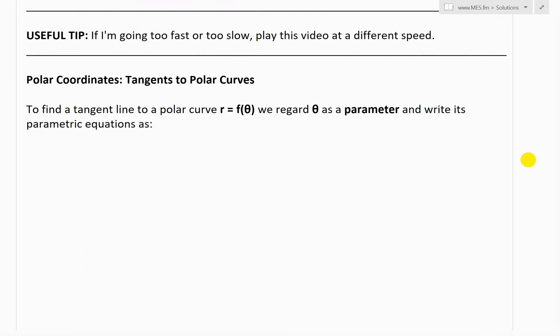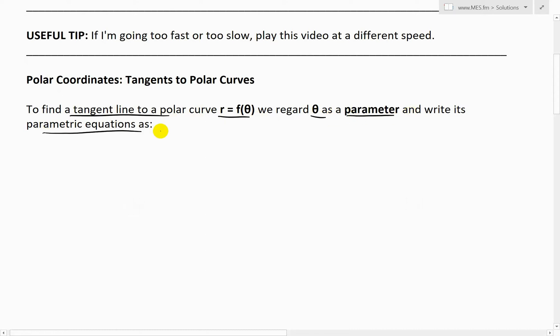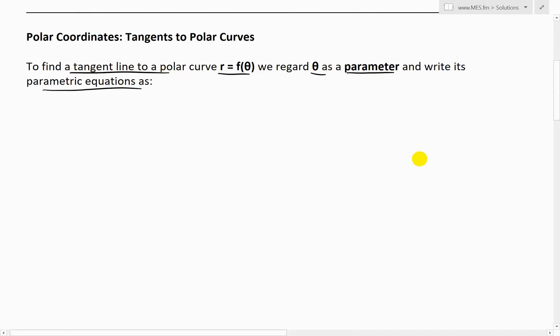So let's jump right in. To find a tangent line to a polar curve, r equals f of theta, or as a function of theta, we regard theta as a parameter and write its parametric equations as follows.